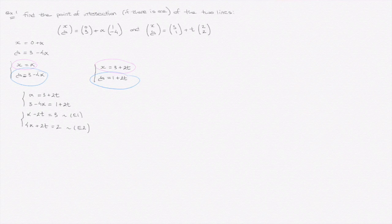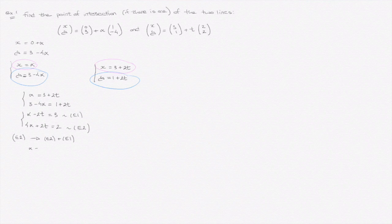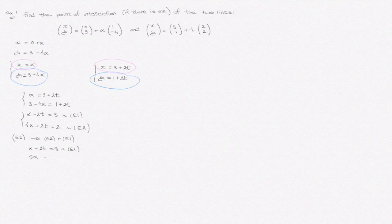I'm going to write e2 becomes e2 plus e1. The first equation e1 is unchanged, and the second equation becomes: alpha plus 4 alpha gives 5 alpha, negative 2t plus 2t gives 0, equals 3 plus 2 which is 5. So this means alpha is equal to 1.